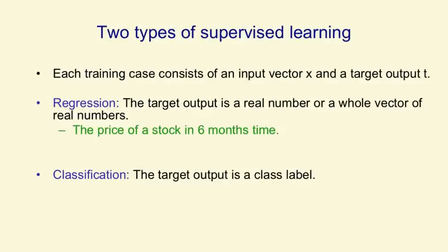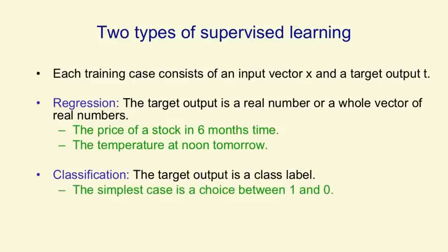Supervised learning itself comes in two different flavours. In regression, the target output is a real number or a whole vector of real numbers, such as the price of a stock in six months' time or the temperature at noon tomorrow, and the aim is to get as close as you can to the correct real number. In classification, the target output is a class label. The simplest case is a choice between one and zero, between positive and negative cases, but we can have multiple alternative labels, as when classifying handwritten digits.